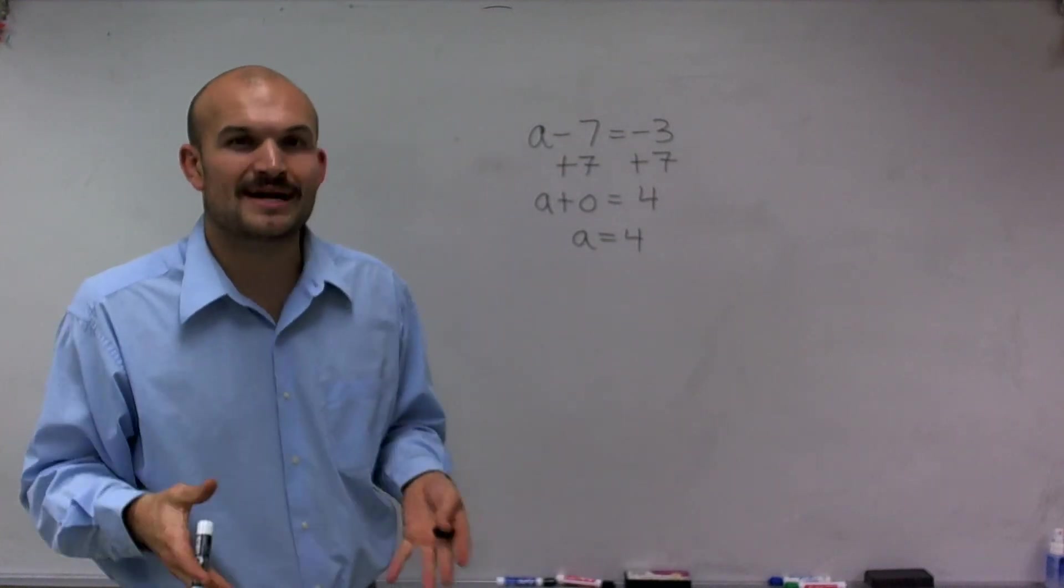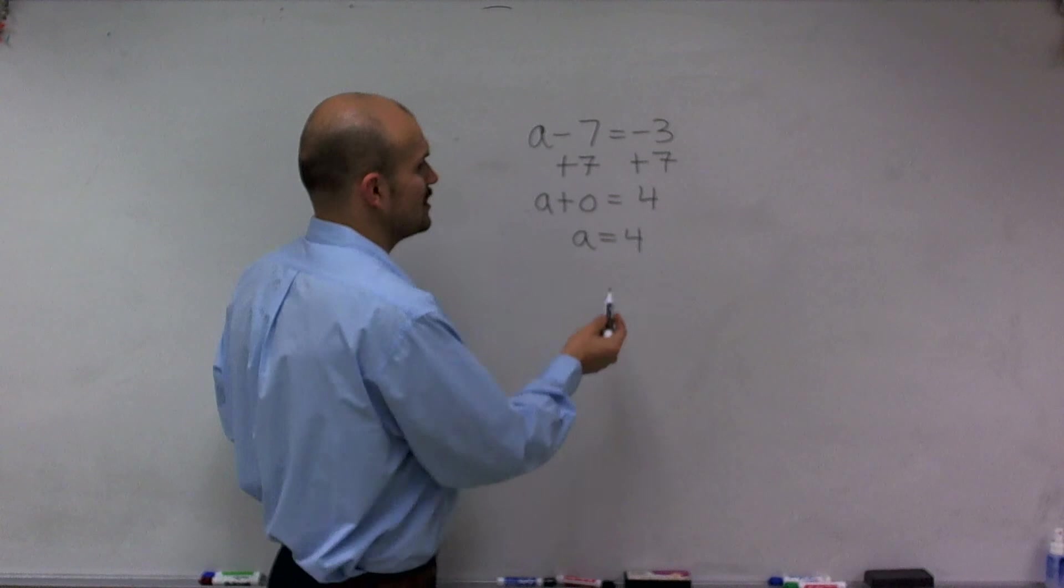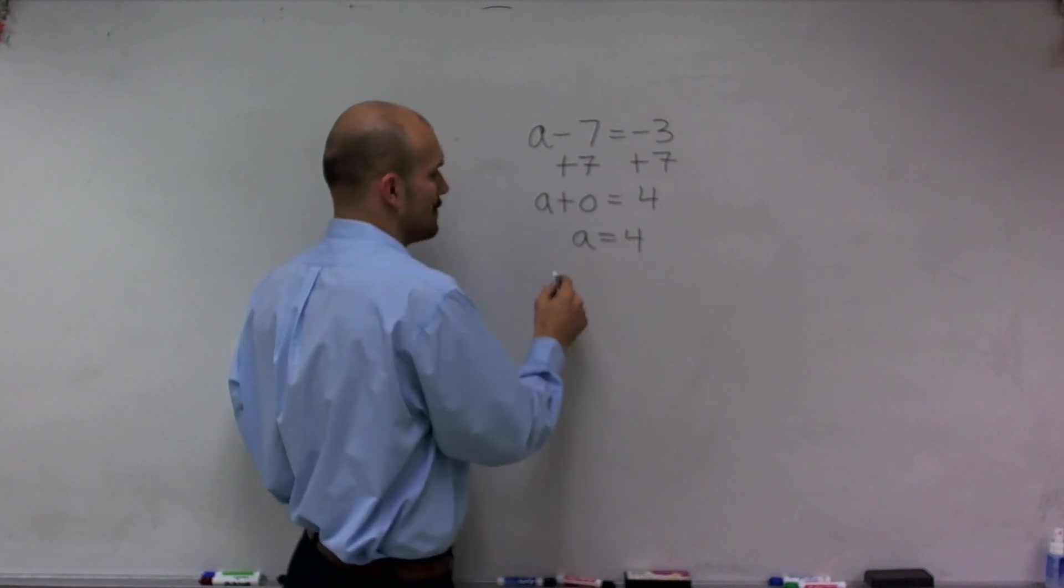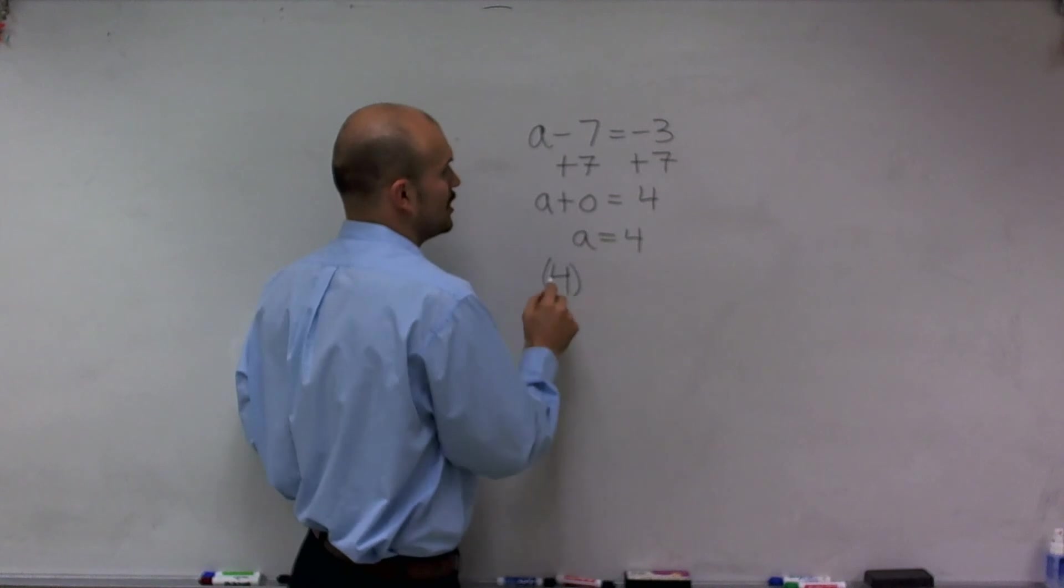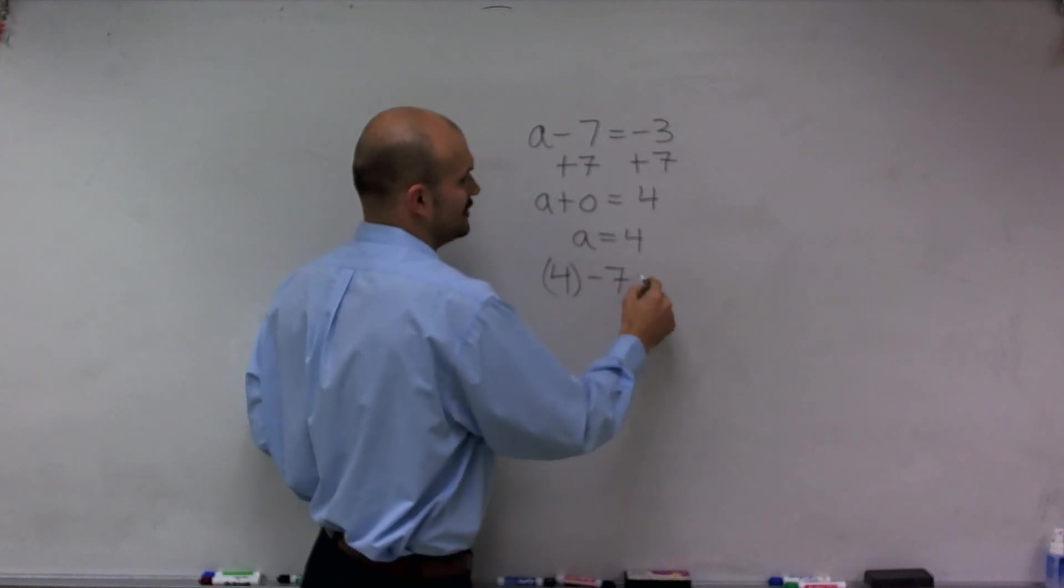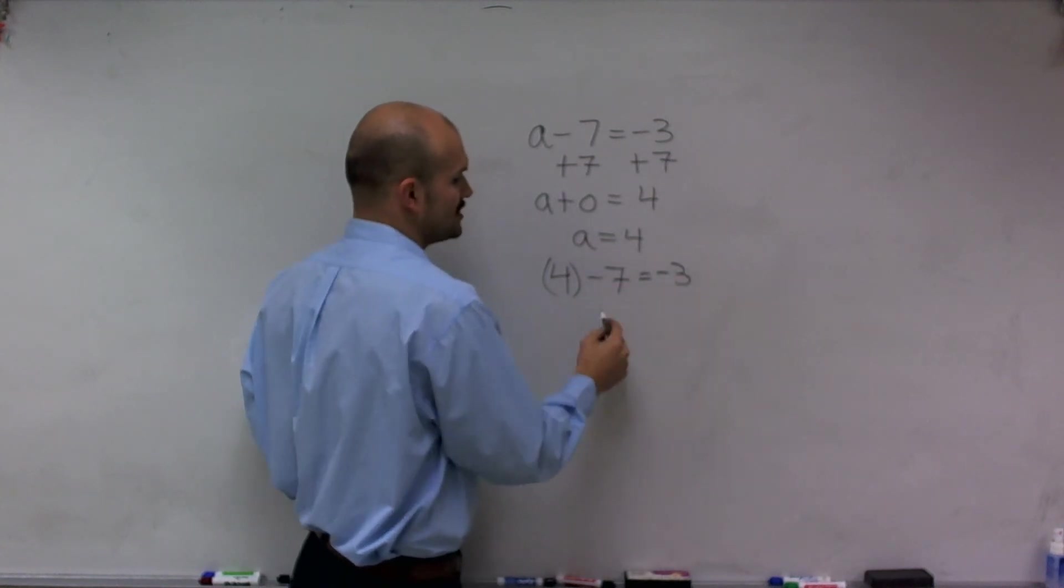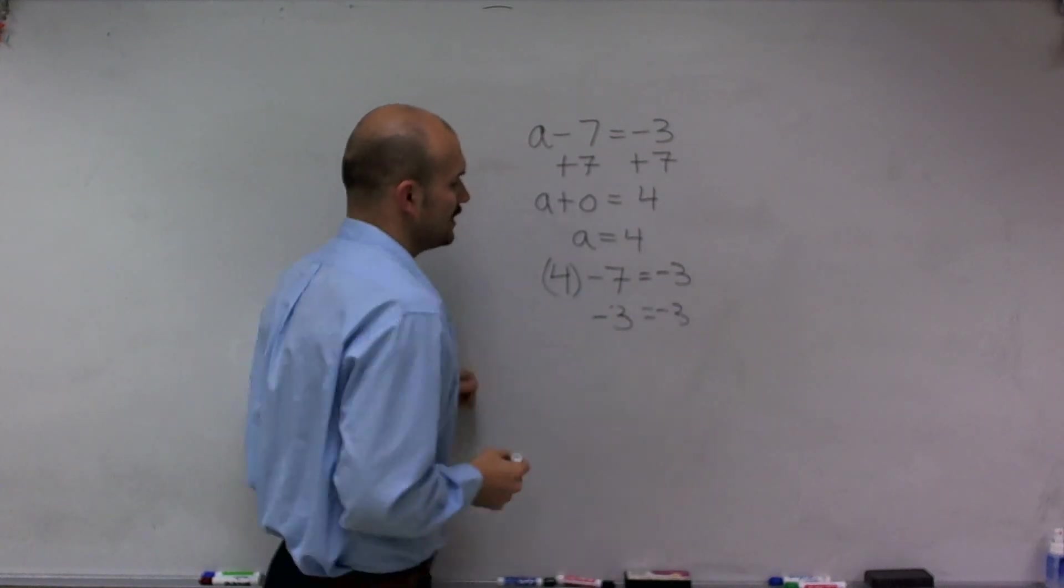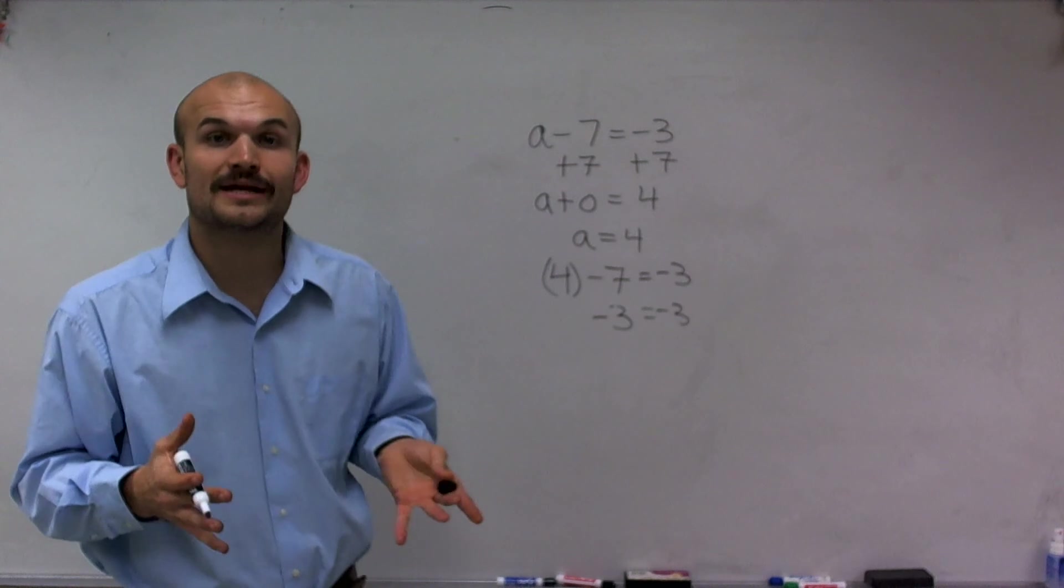So to double check my answer, to make sure what I did is correct, what you can always do is plug in the value of a that you solved for and plug it back into the original equation. So 4 minus 7 equals negative 3. By checking our answer, by simplifying this left side, we do indeed see that my answer for a equals 4 is correct.